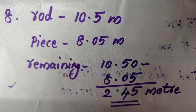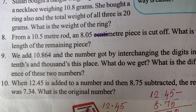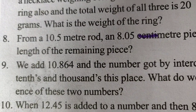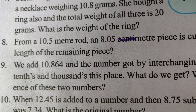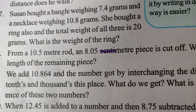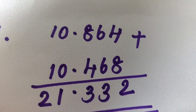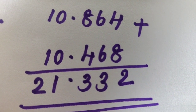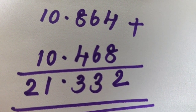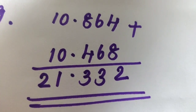Question 9. We add 10.864 and the number got by interchanging the digits in its tens and thousandths places. What do we get? Then, what is the difference of these two numbers? In 10.864, we interchange the digit in the tenths place and the thousandths place. So 10.864 becomes 10.468. Adding both: 10.864 plus 10.468 equals 21.332.